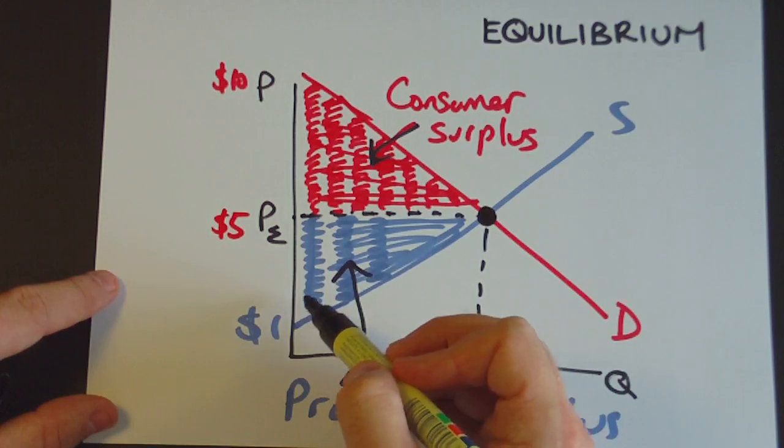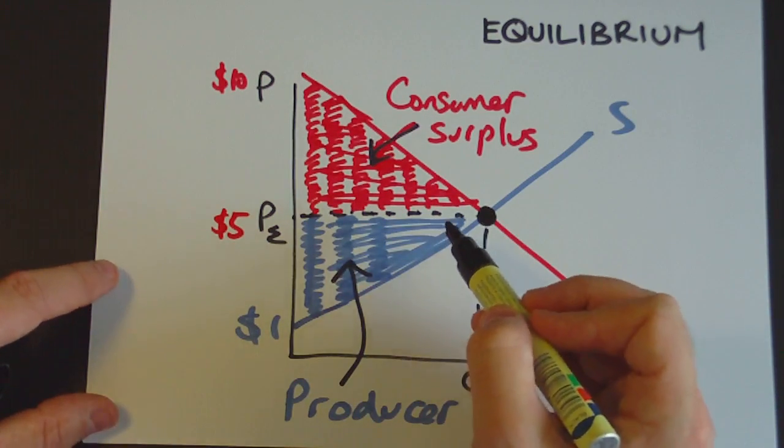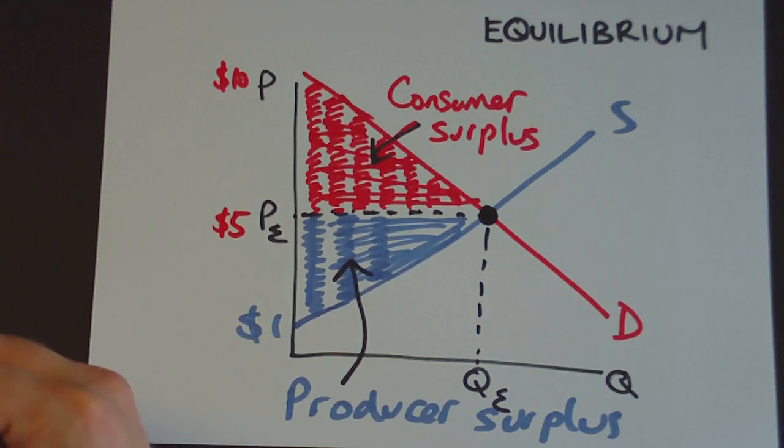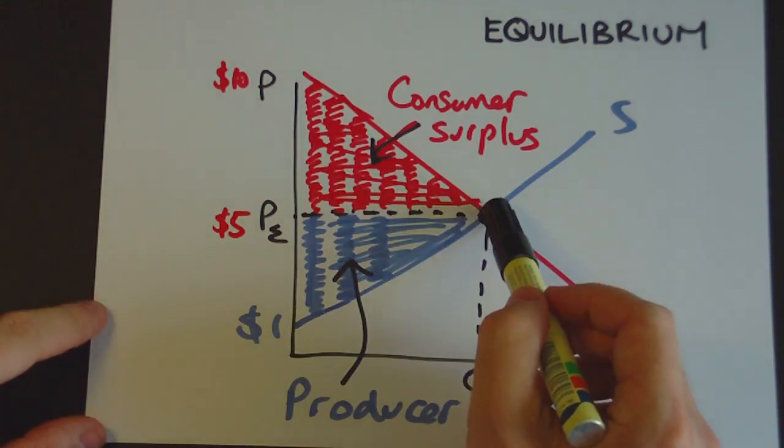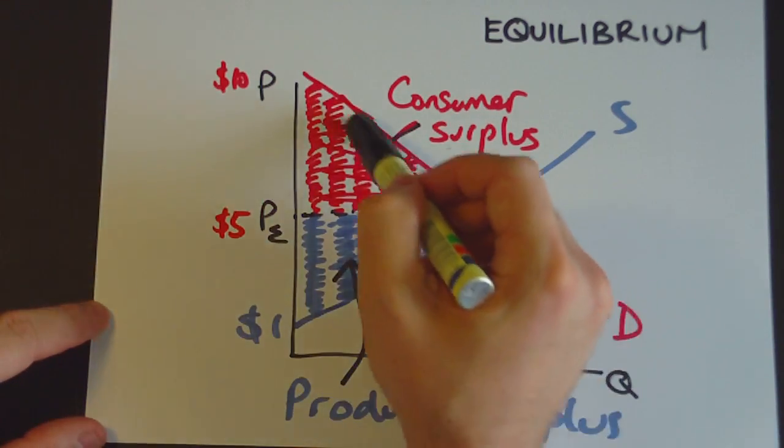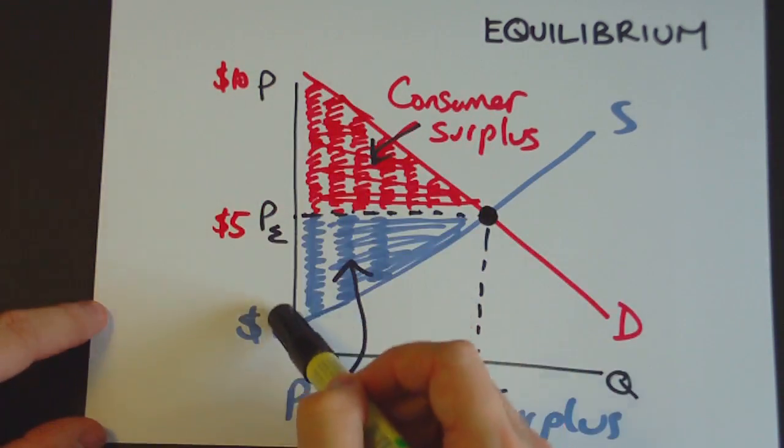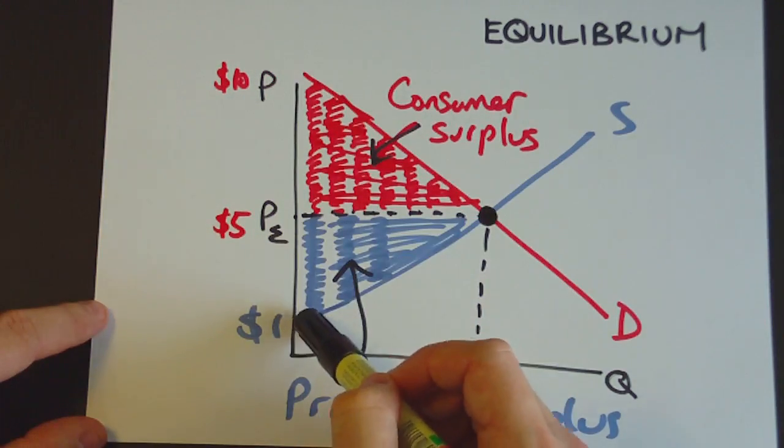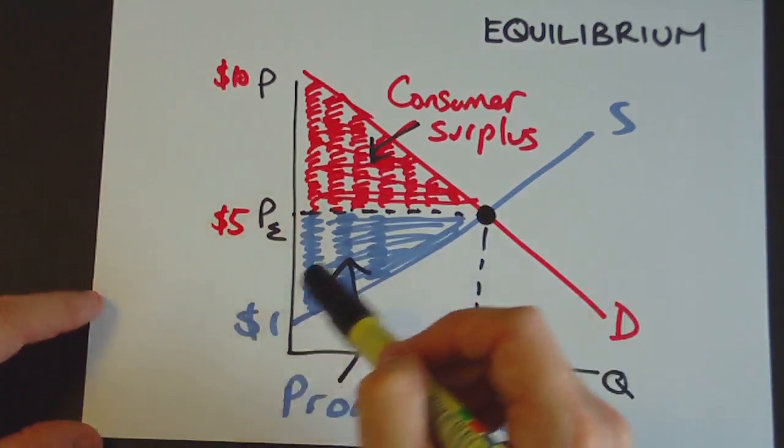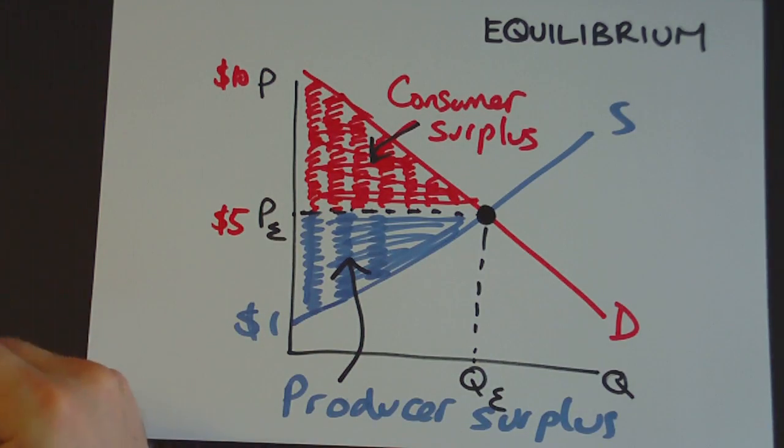And anything above the supply curve to the horizontal line here is going to be producer surplus. Now, because society is made up of consumers and producers, then the idea is that the total area of consumer surplus plus producer surplus is equal to something called social surplus.